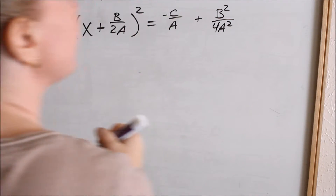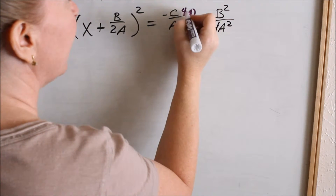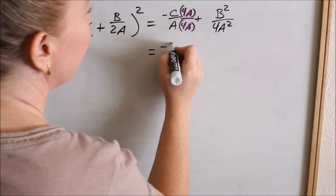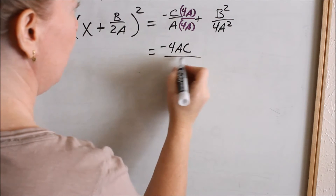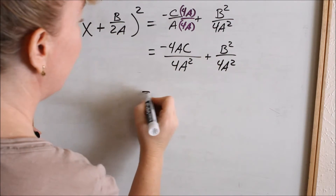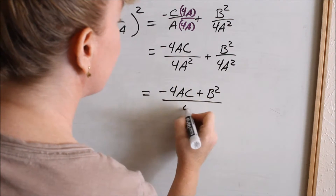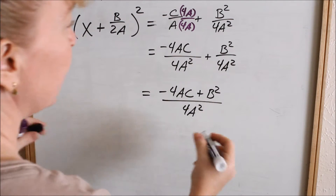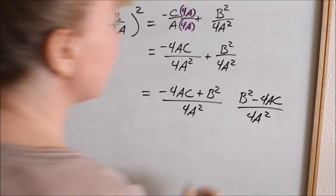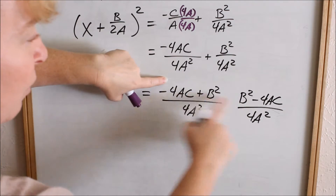So on the right-hand side, we have negative c over a plus b squared over 4a squared. Now to add fractions, I have to make a common denominator. I have 4a squared here, so I need to multiply the first fraction by 4a over 4a. So now I will have negative 4ac over 4a squared plus b squared over 4a squared. Now that I have a common denominator, I can combine my numerators: negative 4ac plus b squared all over 4a squared. If I rewrote this as b squared minus 4ac all over 4a squared — is that the same thing? Yes, they are. The numerators are the same; I kept my positive sign with b and my negative with 4ac.